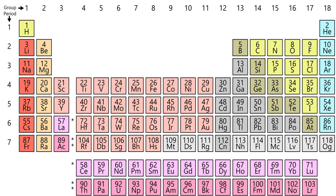Period 4 elements immediately after the first row of the transition metals, such as selenium and bromine, have unusually small atomic radii because the 3d electrons are not effective at shielding the increased nuclear charge, and smaller atomic size correlates with higher electronegativity.